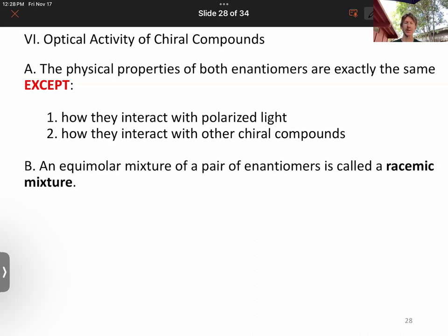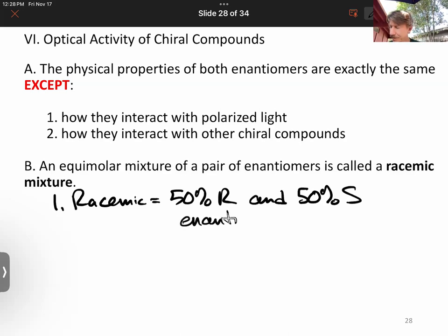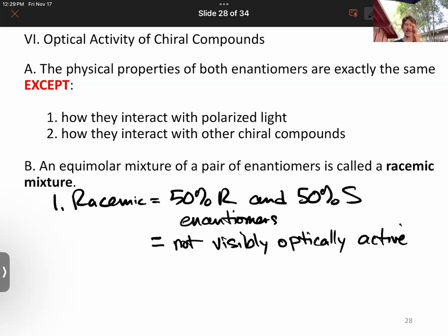Now, an equal molar mixture of a pair of enantiomers is called a racemic mixture. Racemic mixture equals 50% R and 50% S enantiomers. And just to be clear, a racemic mixture is not visibly optically active because the 50% that is going to interact with the light in one specific direction is going to be canceled by the 50% that affects light in the other direction.